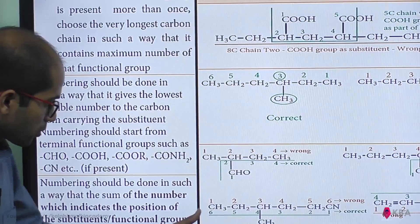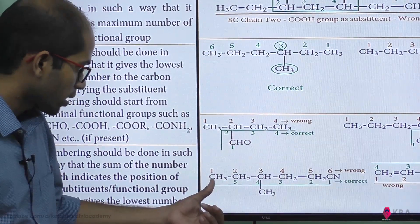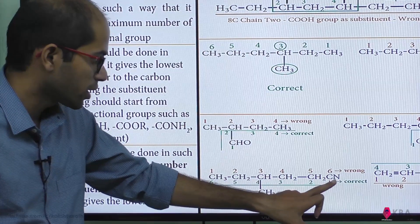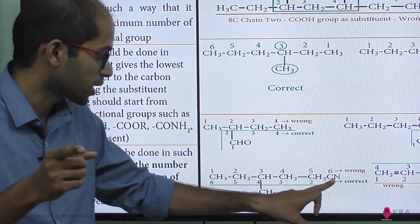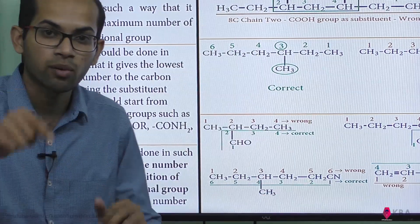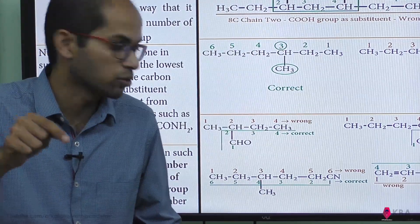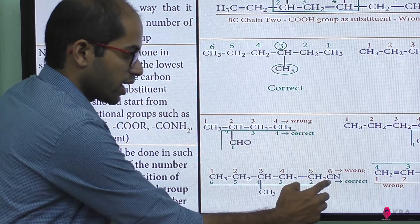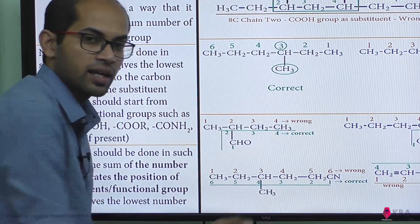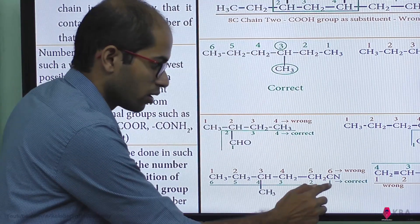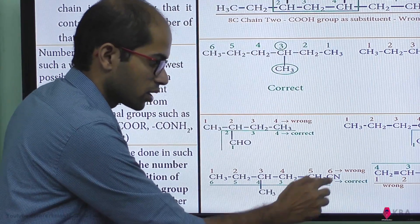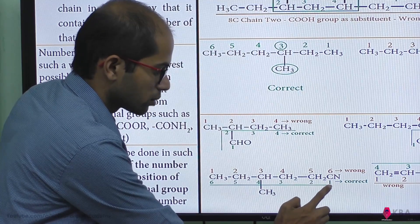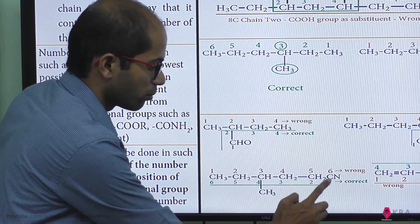If you look at this, you can see a CN (cyanide) group attached. Now, the cyanide group gets first preference. So numbering starts here. CN carbon — that is the consideration; that is number one. So the lowest number assigned is number one.